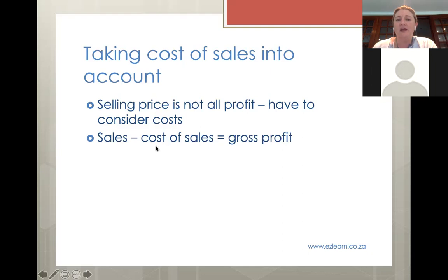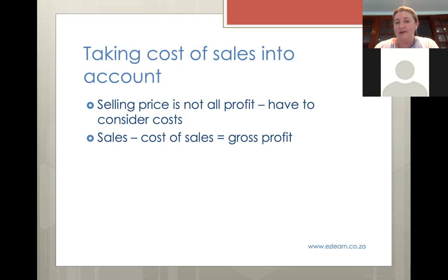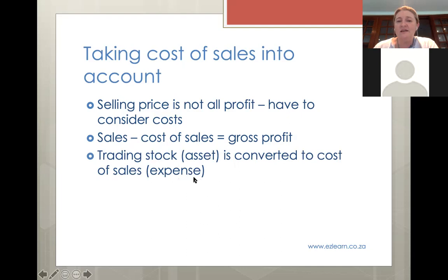Subtracting your cost of sales from your sales gives you something called gross profit - a new idea. The word 'gross' just means big, so it's the profit relating to how your business is actually trading, before all your other operating expenses. You've got to remember that you take that trading stock asset and turn it into cost of sales. Before the sale you had a trading stock asset; after the sale you've got an expense, and you no longer have the asset. You just take the asset and turn it into an expense.